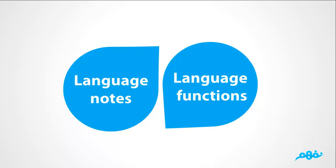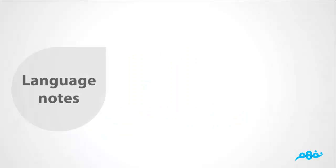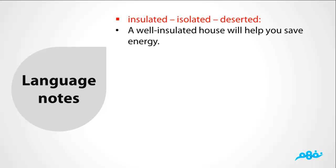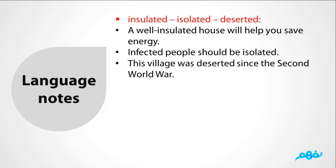Language nodes. The difference among insulated, isolated, and deserted can be understood through the following examples: a well insulated house will help you save energy; infected people should be isolated; this village was deserted since the...